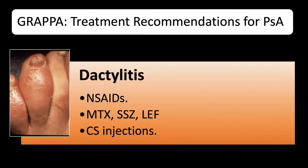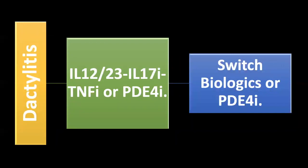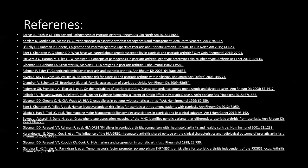According to the GRAPPA recommendations, dactylitis is first treated with NSAIDs and conventional DMARDs including methotrexate, sulfasalazine, and leflunomide, followed by corticosteroid injections if not responding. If still not responding, we move to biologics — approved options include IL-12/23 blockers, IL-23 inhibitors, recently approved IL-17 inhibitors, TNF-alpha inhibitors, and abatacept (CTLA4-Ig), which also have good data for dactylitis management. After failure of one biologic mechanism, switching between different biologics is recommended to achieve remission.